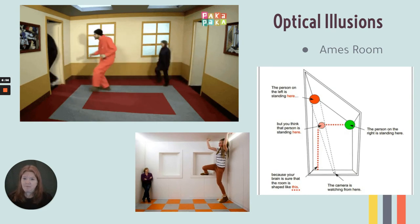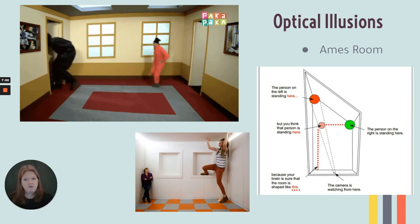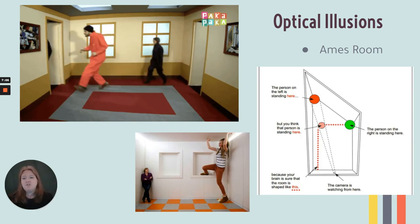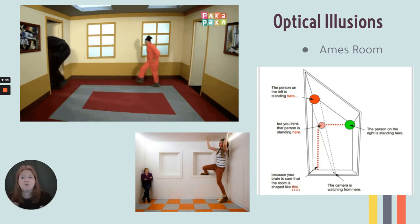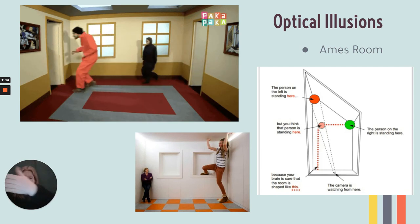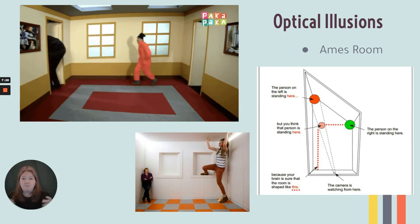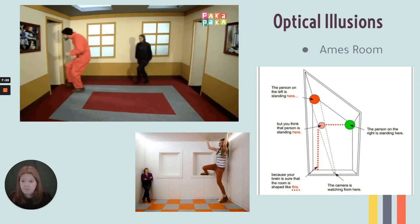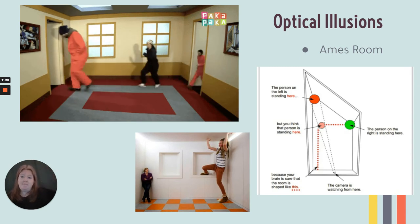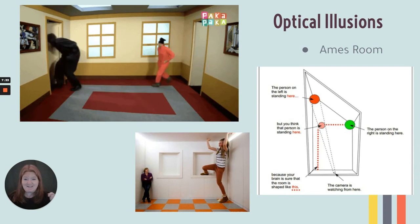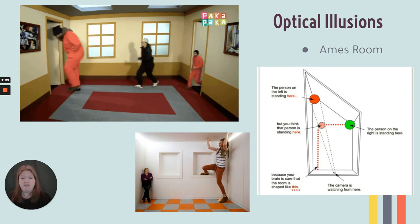The Ames room — you can see how people appear to grow in size as they move through the room. We know logically that's not possible. It's because of the structure of the room. Normally our brain thinks rooms should be square or rectangular. An Ames room has an area in the back where it goes back to a corner at a weird angle, and our brain has a hard time processing that. So people standing in that corner appear smaller or larger depending on where they are — that's how we get tricked.